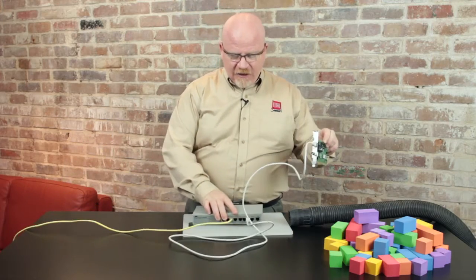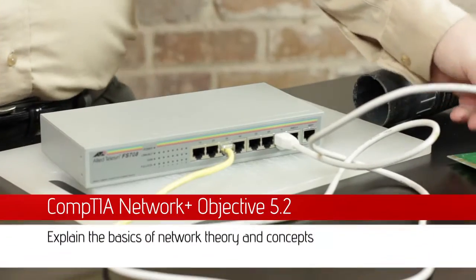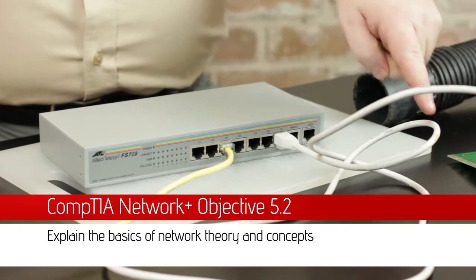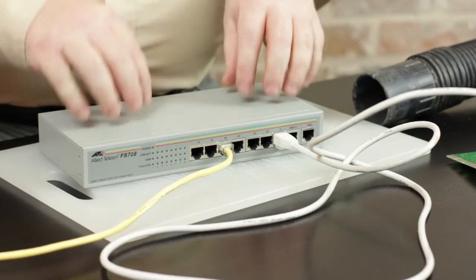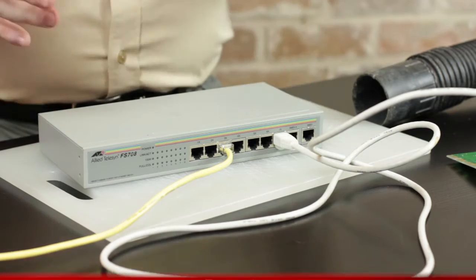So if you take a look at a network, what we have here is a hub. Now on this hub, if I'm sending data, it's coming in from the white cable. When it gets inside the hub, the hub is what we call a repeater.